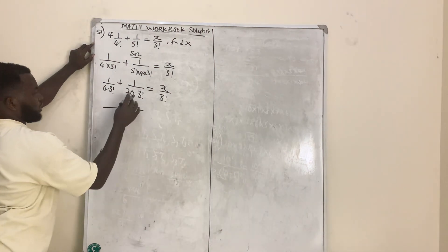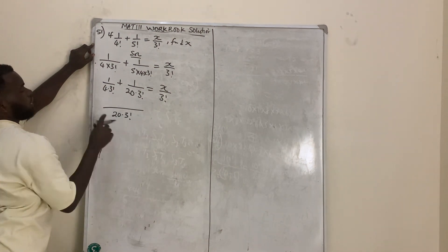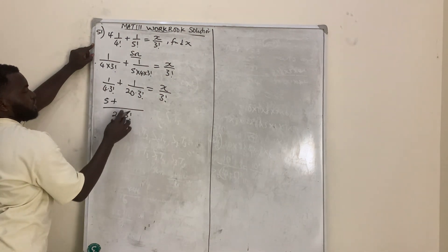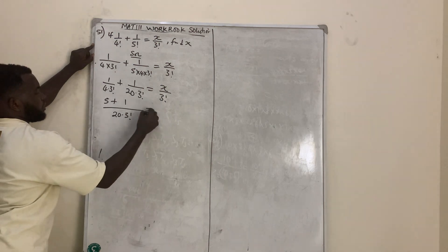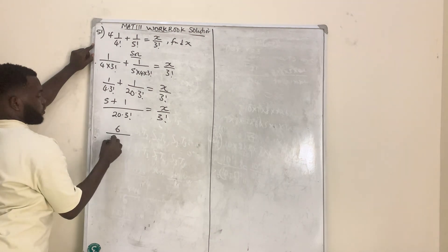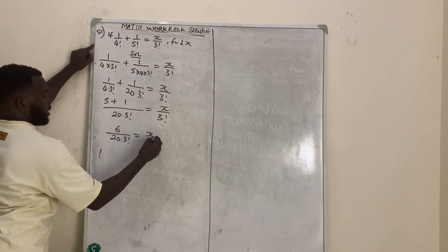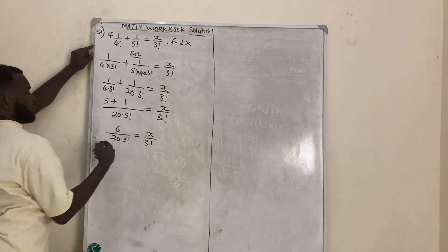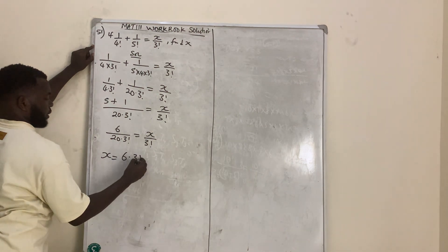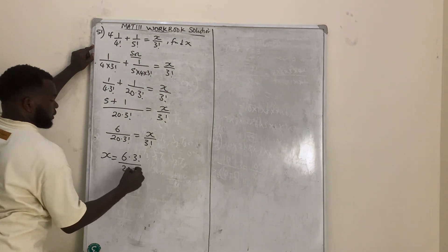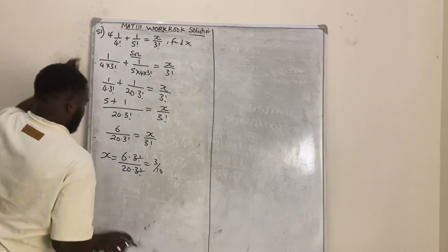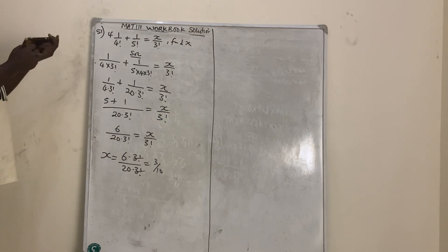The LCM of the left side is 20 dot 3 factorial. Dividing through: 5 times 1 is 5, plus 1 times 1 is 1, giving 6 over 20 dot 3 factorial equals x over 3 factorial. Cross-multiplying, the 3 factorials cancel, giving x equal to 6 over 20, which simplifies to 3 over 10. So x is simply 3 over 10.